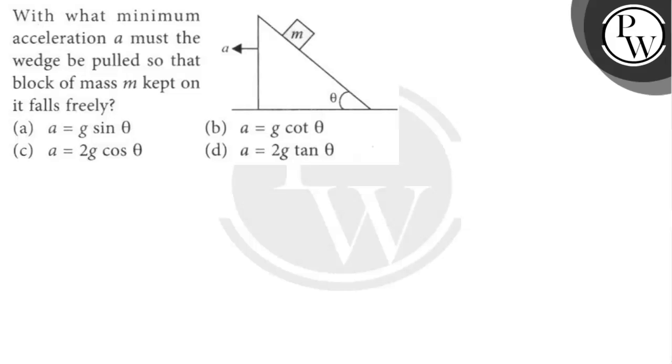Let's read the question. With what minimum acceleration a must the wedge be pulled so that a block of mass m kept on it falls freely? First, we draw the free body diagram. Here, mg force is applied.